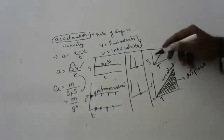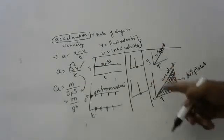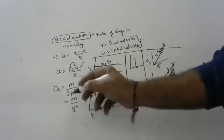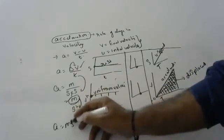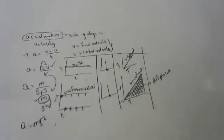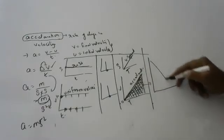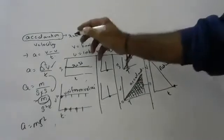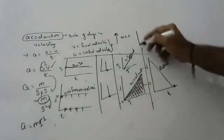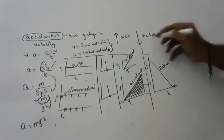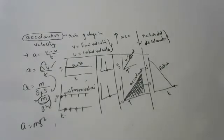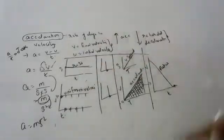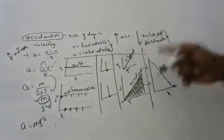Uniform speed means uniform acceleration. Acceleration is change in velocity divided by time, so the unit is meters per second squared. If the graph is decreasing — speed is decreasing — that is called retardation. Increase in speed is called acceleration; decrease in speed is called retardation, also called deceleration.